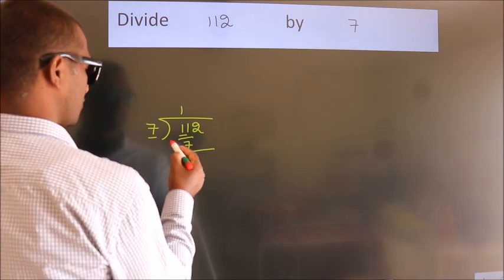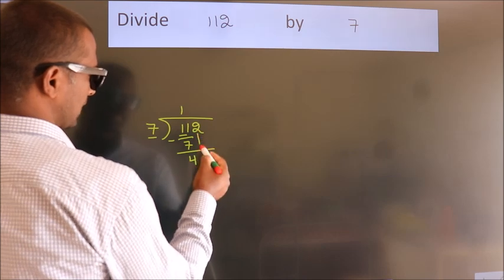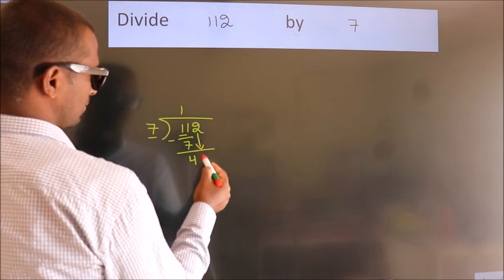Now we should subtract. We get 4. After this, bring down the beside number, so 2 down.